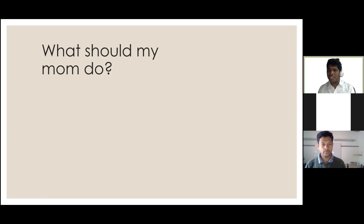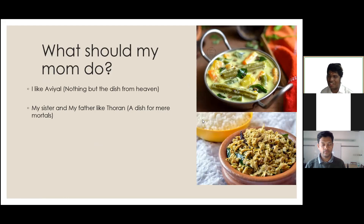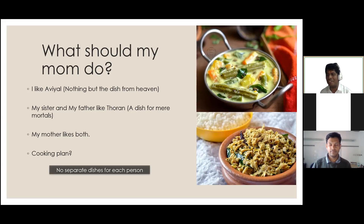To begin with, let me ask a question that my mom probably faced when I was a child. I like a dish called avial — it's a dish from heaven and absolutely delicious. My sister and my father liked another dish called toren. These are South Indian dishes. My mother likes both. The question is: what should my mother choose to cook? Should she make avial, which I like, or toren, which both my sister and father like?